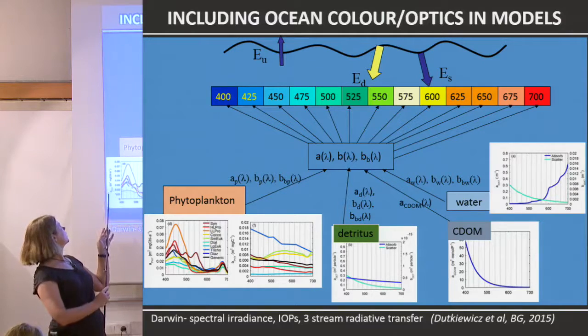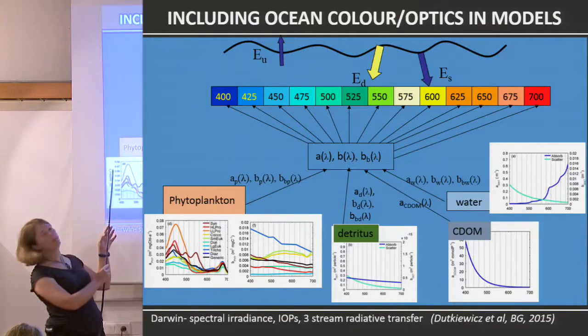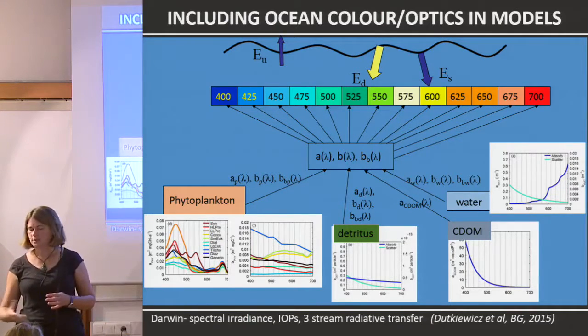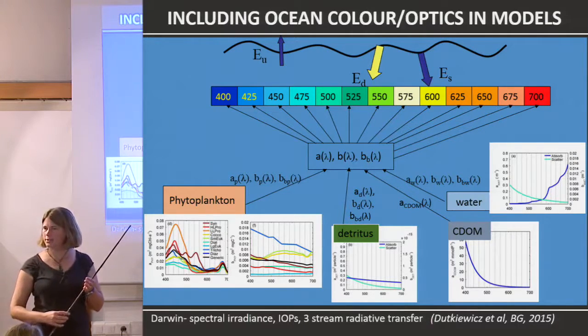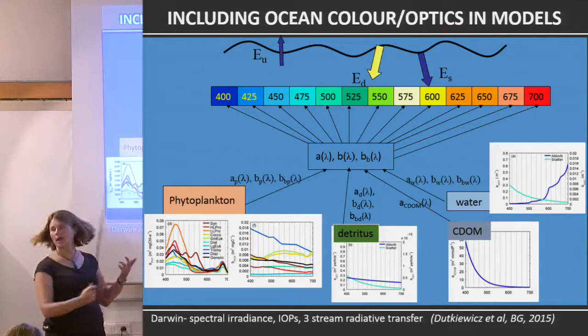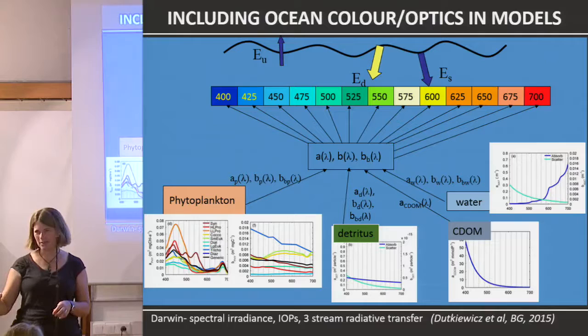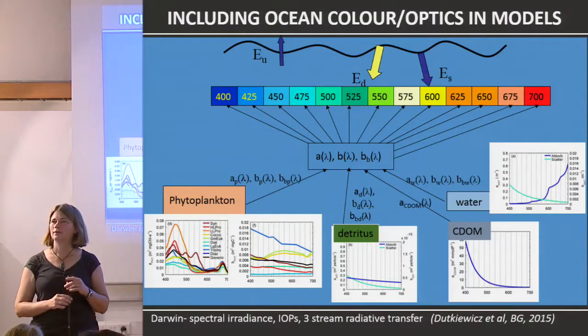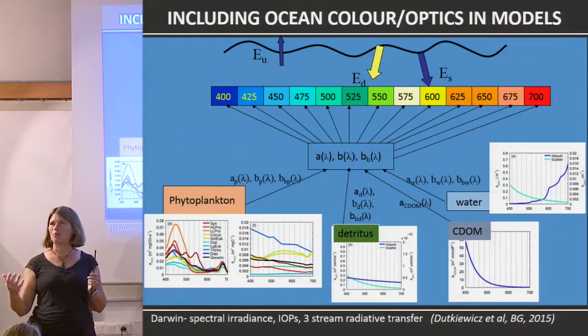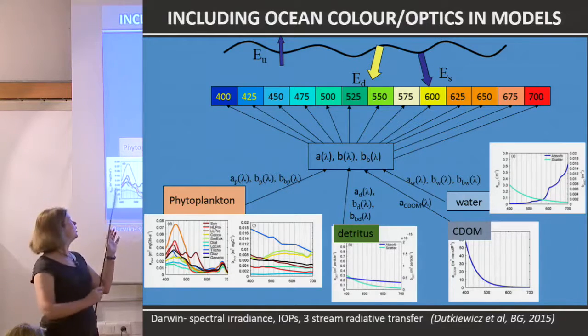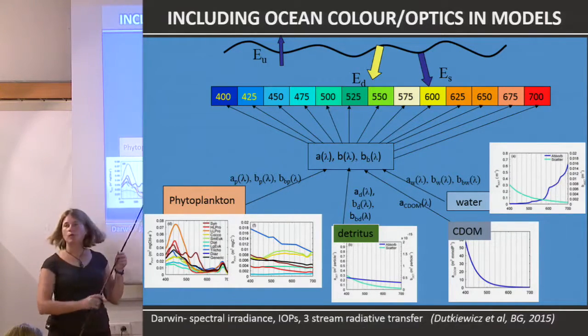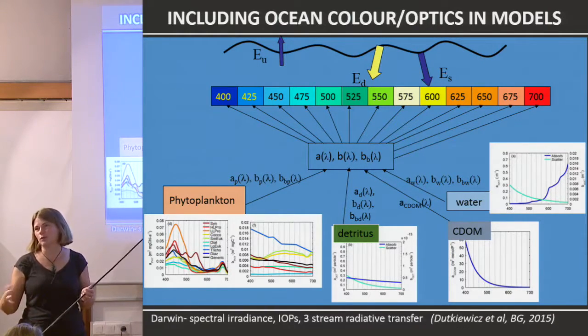These absorption spectra are not state variables — they're inherent properties of the phytoplankton. Each phytoplankton has a carbon biomass and a chlorophyll biomass. The absorption is in meters squared per milligram of chlorophyll, so if there is one milligram of chlorophyll of a given type it absorbs light by that amount per meter cubed. The scattering is actually per carbon, because we decided it's the body itself — not the pigments — that matters for scattering.